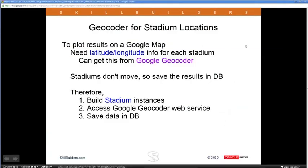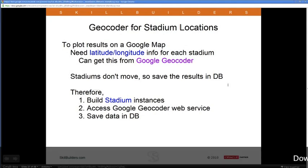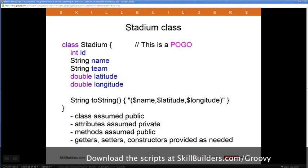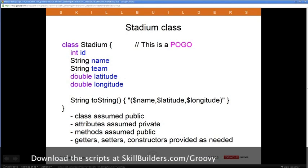To put dots on a map I need to know where the games are played — specifically the latitude and longitude of the home stadium. Google has a RESTful web service called the Geocoder: you send an address and it returns latitude and longitude. Since stadiums don't move, I might as well save those results in the database. When the application starts up it reads that database table and we're ready to go.